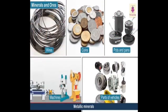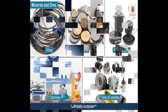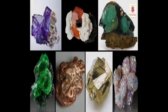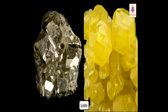There are two types of minerals: metallic minerals and non-metallic minerals. Metallic minerals contain metal and are used to make wires, coins, pots and pans, machines, and parts of vehicles. Diamond and graphite are examples of non-metallic minerals. We can identify many minerals by carefully observing their physical properties like hardness, color, and luster. The hardness of minerals is determined with the scratch test, as shown in the picture.